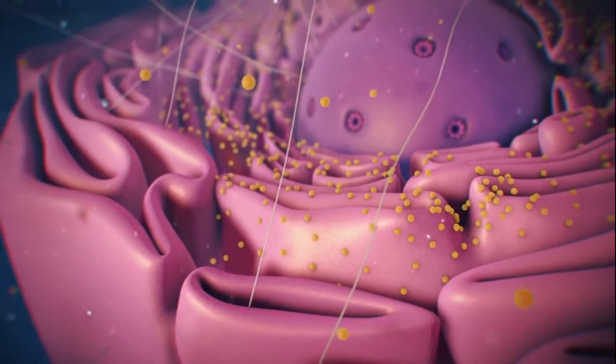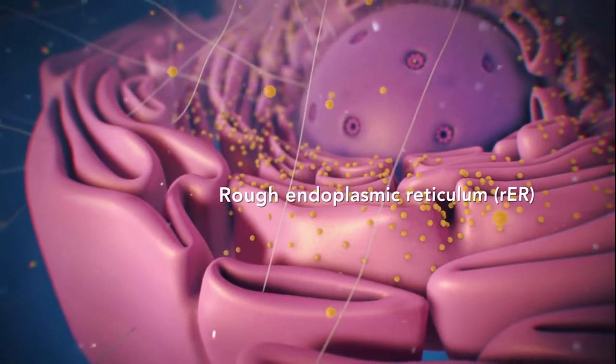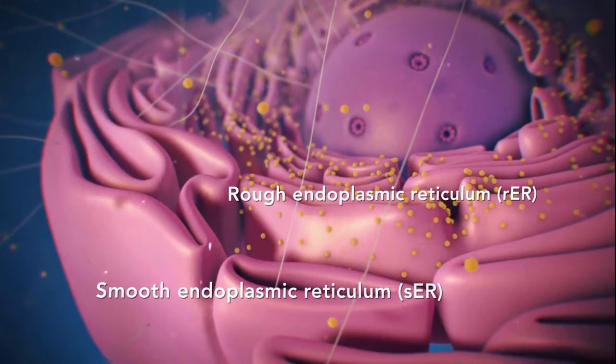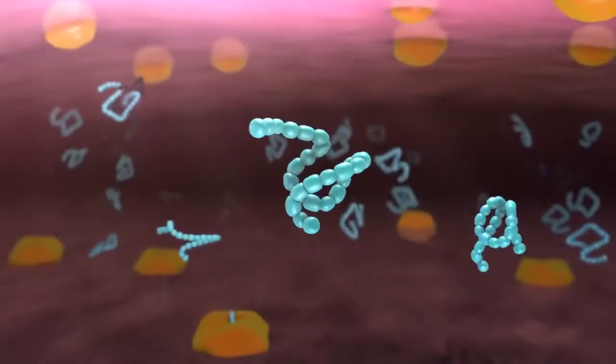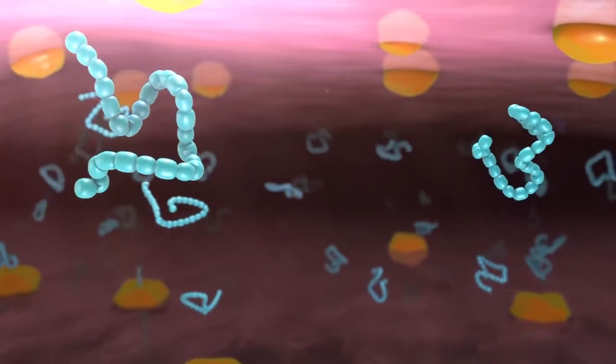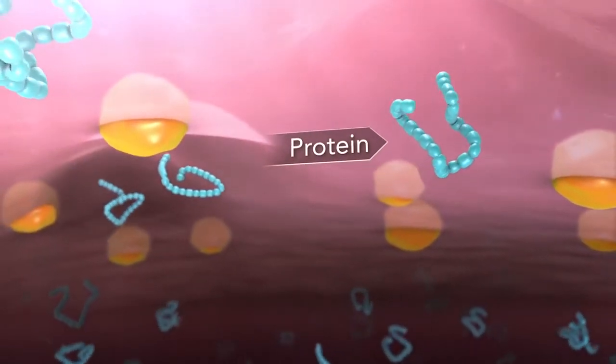There are two types of ER. Rough ER has ribosomes attached to it, and smooth ER doesn't have ribosomes attached to it. The endoplasmic reticulum is a membrane-enclosed passageway for transporting materials, such as the proteins synthesized by ribosomes.